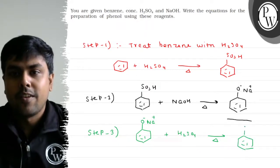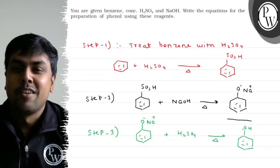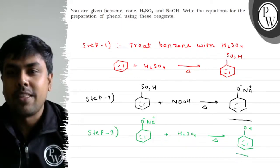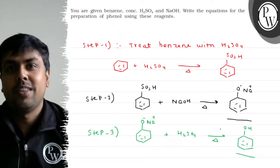The desired product is phenol (OH). So this is how we synthesize phenol from benzene using these reagents. I hope you understood the question.